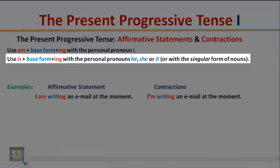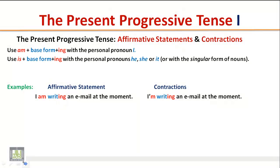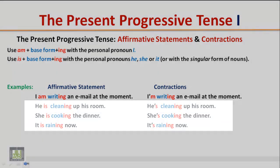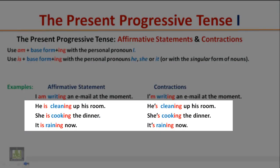Use 'is' plus the base form plus '-ing' with the personal pronouns 'he,' 'she,' or 'it,' or with the singular form of nouns. Examples: 'He is cleaning up his room.' / 'He's cleaning up his room.' 'She is cooking the dinner.' / 'She's cooking the dinner.' 'It is raining now.' / 'It's raining now.'